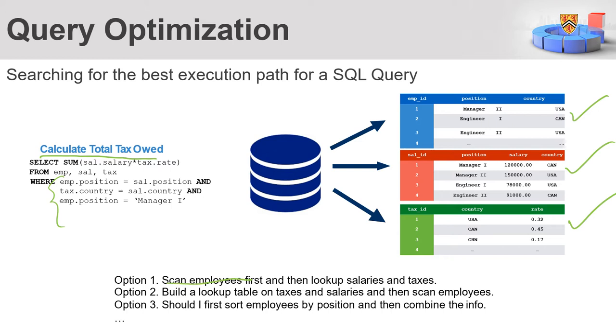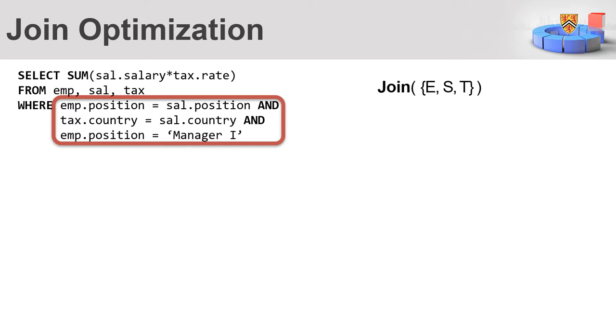Like for this case, option one, scan employees first and then you can look up salaries and taxes. Or option two, build a look up table on taxes and then salaries and then scan the employees. Or in option three, you could first sort the employees by the position, then combine the information.